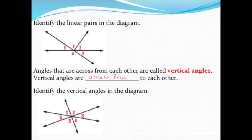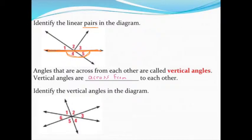This next question asks us to identify linear pairs. We'll use numbers to label angles since there are no letters this time. I'm looking for straight lines in the picture. One straight line is right here, and I want to find only pairs of angles. Angles four and five are a linear pair — they are the two that together make a straight line.